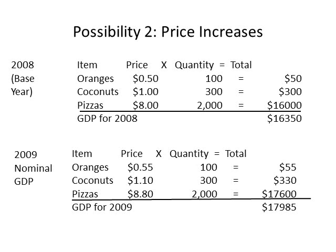In 2009, oranges now sell for $0.55 and 100 oranges are sold, adding $55 to GDP. Coconuts now sell for $1.10 each and 300 are produced, adding $330 to GDP. Pizzas sell for $8.80 each, and 2,000 pizzas are sold, adding $17,600 to GDP. The total GDP is $17,985, but it's important to notice that the prices have increased, not the quantity. The key conclusion is that GDP can increase merely by increasing prices; however, consumers and firms will not be better off because they are being forced to pay higher prices.